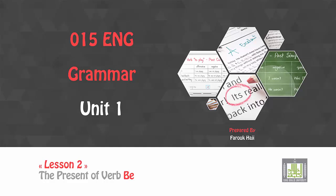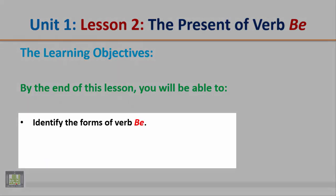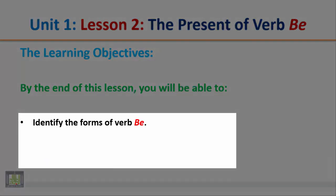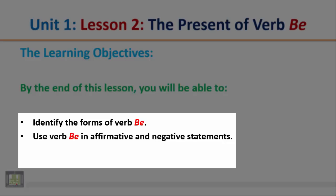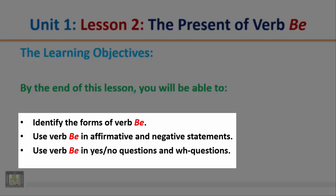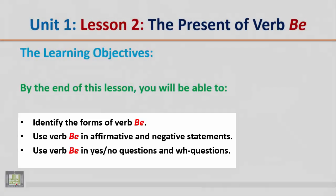Bismillah ar-Rahman ar-Rahim. Grammar Unit 1, Listen 2: The Present of Verb Be. The Learning Objectives. By the end of this lesson, you will be able to: identify the forms of verb be, use verb be in affirmative and negative statements, and use verb be in yes-no questions and WH questions.